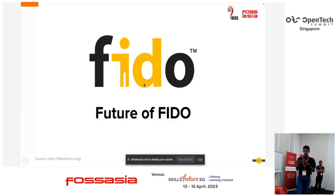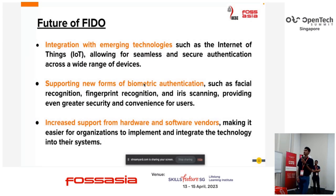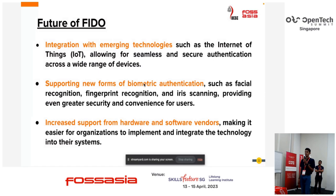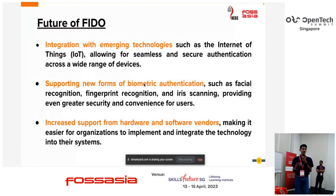What would be the future for identity? The first direction is integration with emerging technologies to allow seamless and secure authentication across a wide range of devices. The second is support for new forms of biometric authentication — such as facial recognition, fingerprint recognition, and eye scanning — for greater security and convenience. Third is broader hardware and software support, making it easier for organizations from Microsoft and others to adopt FIDO2.